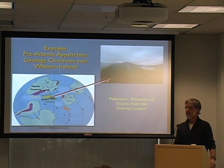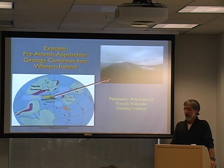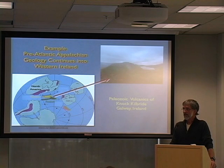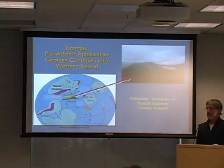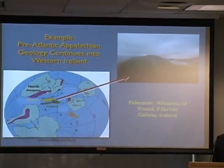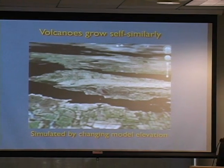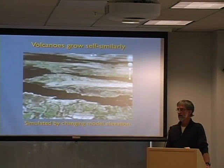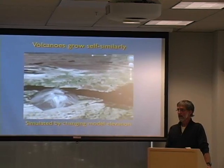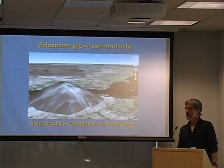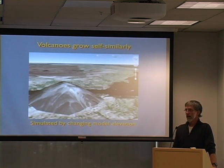I'm particularly interested, with my colleague Steve Whitmire, in the upper right end of this Japan-like arc, because it outcrops in my home country of Ireland, in Western Ireland. There we see Paleozoic volcanics in a place called Knot Kilbride that formed in an island arc environment. So let's take Mount Fuji and put it there. Because volcanoes grow in a self-similar fashion, it's a simple matter to simulate volcanic growth by simply moving the volcano up out of the ground by changing its elevation. This one is actually the second island from the Aleutians, and it's simulating what those Paleozoic rocks in Western Ireland looked like at the time that they were formed.